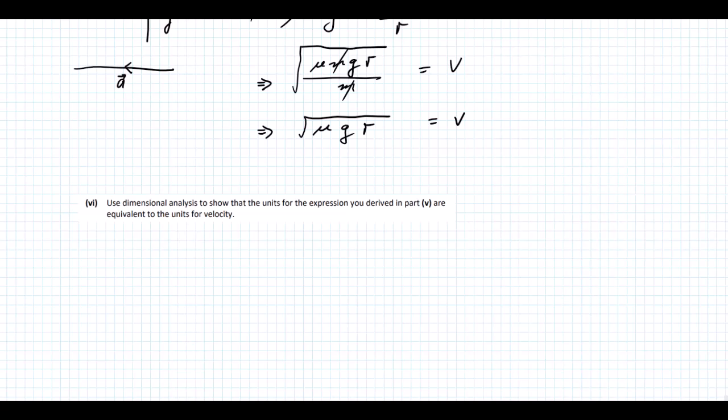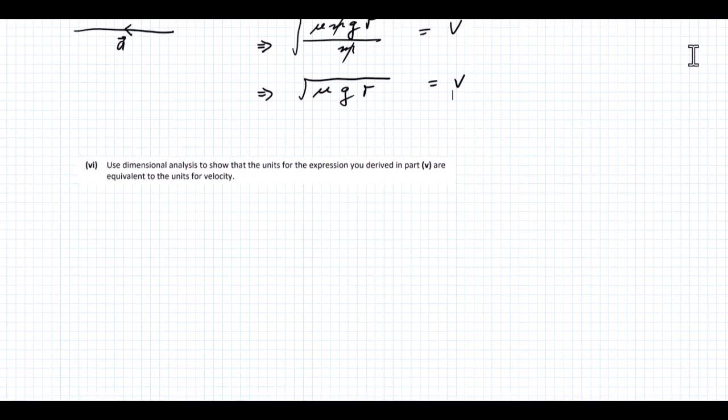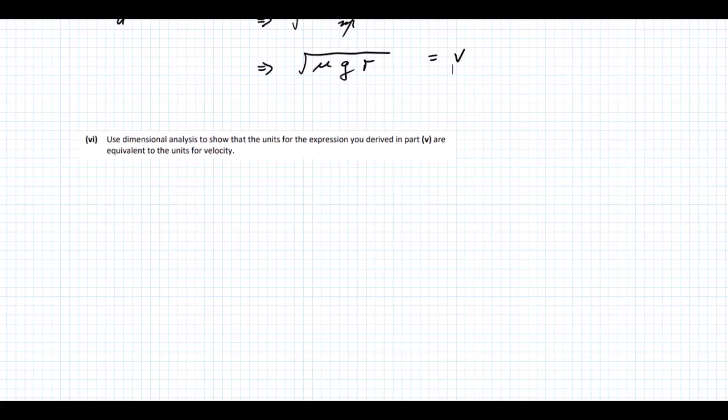Use dimensional analysis to show that the units for the expression you derived in part 5 are equivalent to the units for velocity. We derived this equation: V equals the square root of mu g R. Velocity is in meters per second.